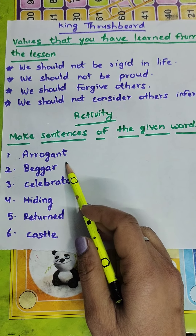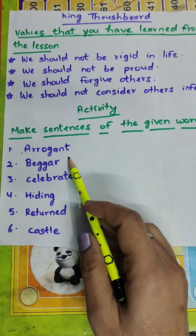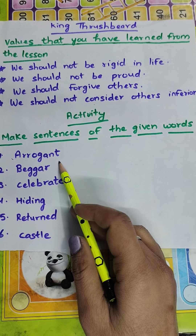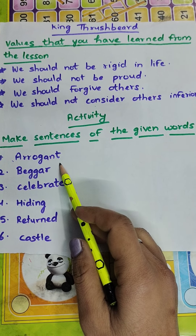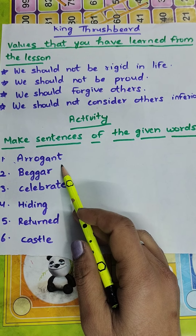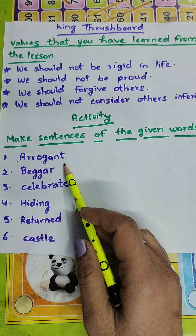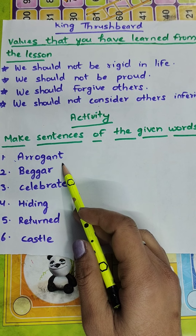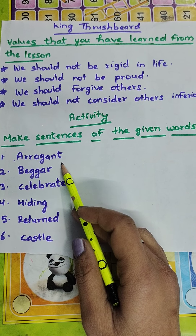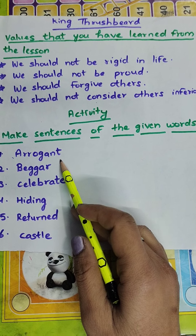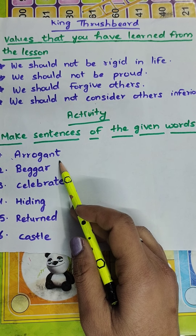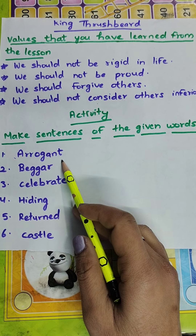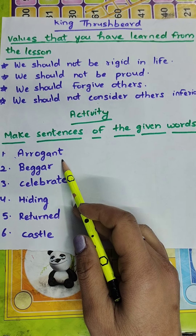First word is arrogant. Arrogant means ghamandi, hankari. You can make sentences like: He was so arrogant. Why are you so arrogant? She is arrogant because of her beauty.